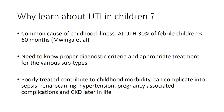UTIs can complicate into urosepsis, which obviously is a high risk for death in the child. They can result in renal scarring later on, can cause hypertension later on as a result of the renal scarring, have been associated with pregnancy-induced complications such as hypertension later in life, and there is also a risk of causing chronic kidney disease, especially in children who develop recurrent urinary tract infections.